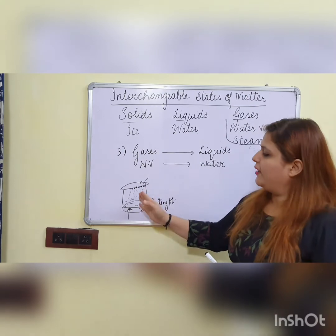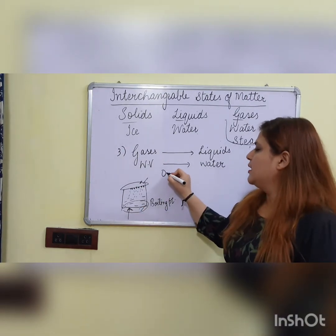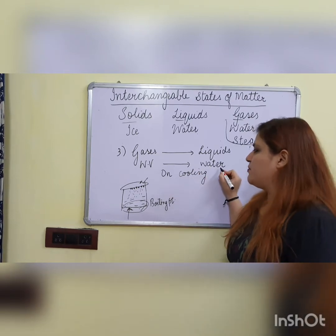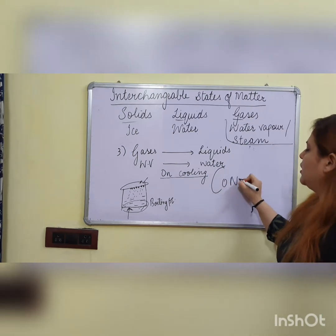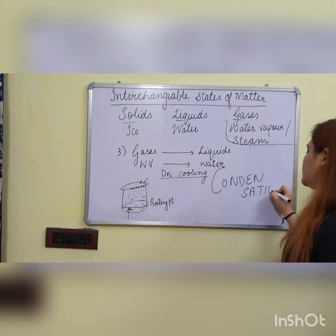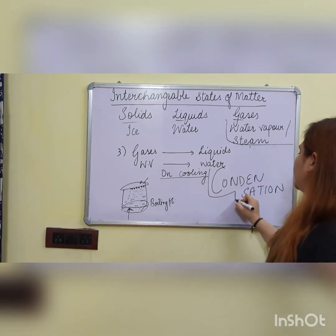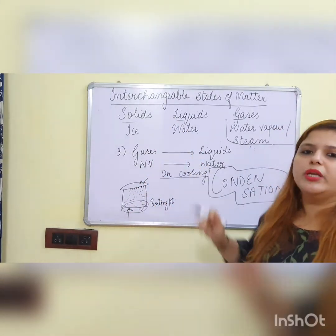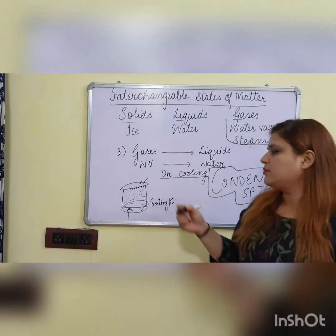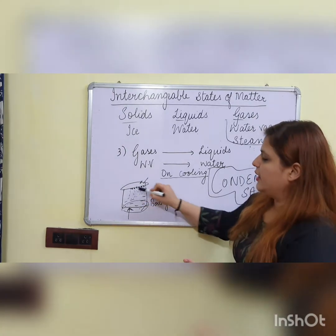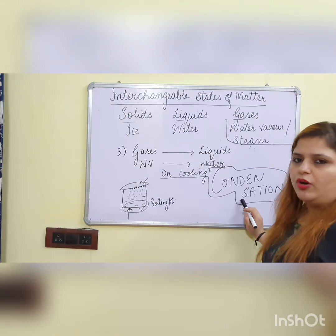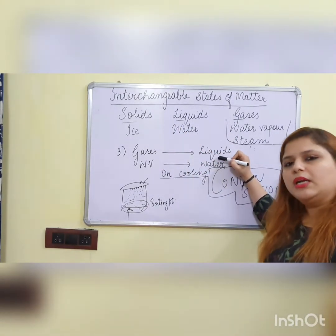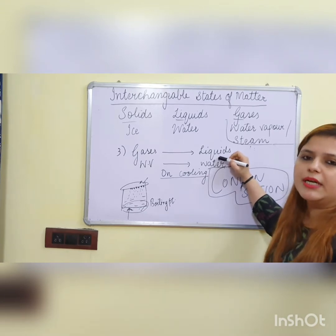Those drops of water on the lid are the water vapor which changed back into water when the temperature decreased — i.e., on cooling. So water vapor changes into drops of water on cooling, and this process is called condensation. C for cooling, C for condensation. Condensation is the process of changing of gases into liquids on cooling, and it applies to every gas that condenses to form a liquid.